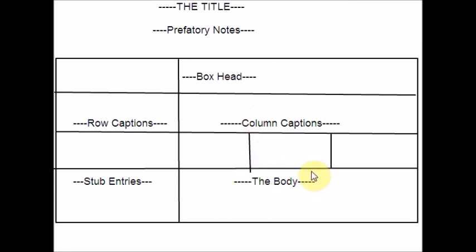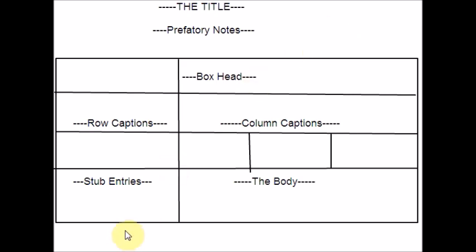Body is the main part of the table, which contains the numerical information classified with respect to rows and columns. Here you will see all the information. And here you will be writing the prefatory notes. A statement given below the title and enclosed in brackets, which usually describes the units of measurements, is called prefatory notes. In case if there is any information, it will be mentioned here. And the footnotes appear immediately below the body of the table, providing additional explanation.